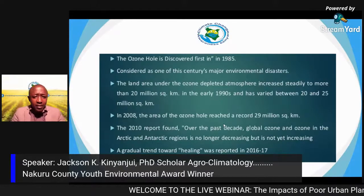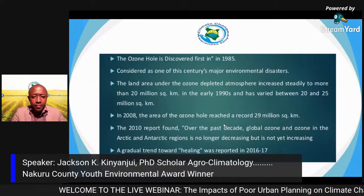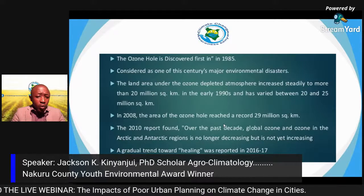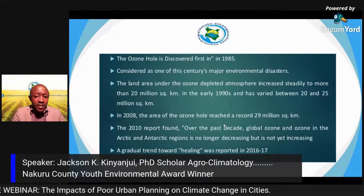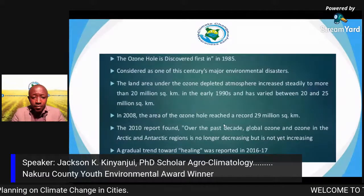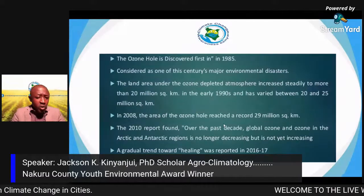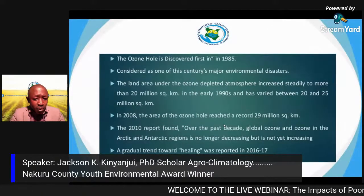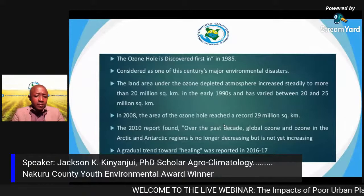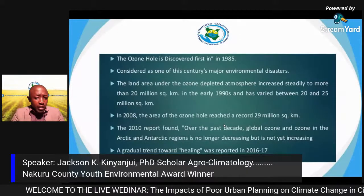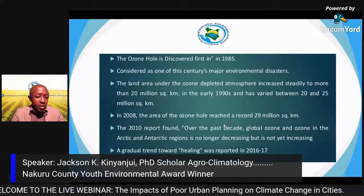The ozone hole was first discovered in 1985 and was considered one of the century's major environmental disasters. The ozone layer being depleted has a ripple effect spanning climate and diseases. The land area under the depleted ozone atmosphere increased steadily to more than 20 million square kilometers in the early 1990s.